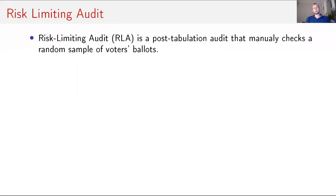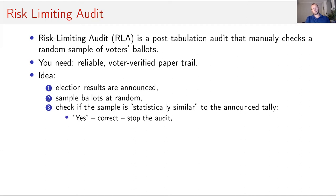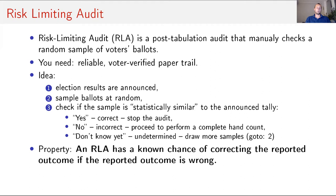Risk limiting audits are post-tabulation audits that manually check random sample of voters' ballots. You need to start from a reliable voter-verified paper trail. Just after election results are announced, and you start your audit, what you do is you sample ballots at random. And then basically what you do is you check if a sample is statistically similar to the announced tally. Your audit can stop and say yes, it is similar. So the tally is correct. But you can say no, it's incorrect. And in that case, you proceed to complete hand count. Or you can say, I don't know yet. But in this situation, you just draw some more samples. So you go back to step number two.